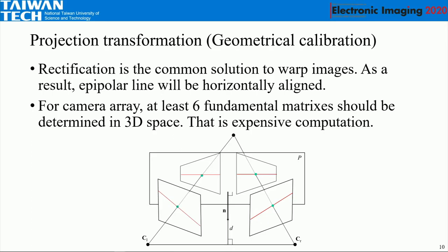Regarding 3D calibration, we use a projective transformation to calibrate our cameras. This is basically a stereo camera problem. Conventionally, stereo cameras use a process called rectification to adjust cameras into a parallel mode — meaning if the epipolar lines are non-aligned, after calibration they will be well aligned. This is a special solution for stereo cameras. But in our system we have at least seven cameras, so pair-by-pair rectification is not good enough and too expensive computationally.